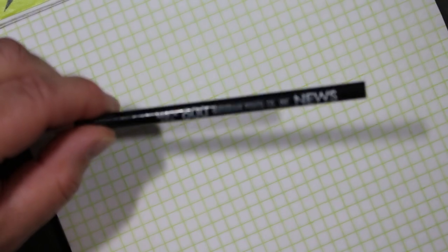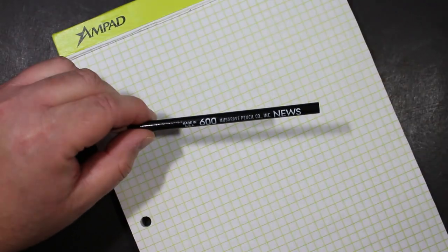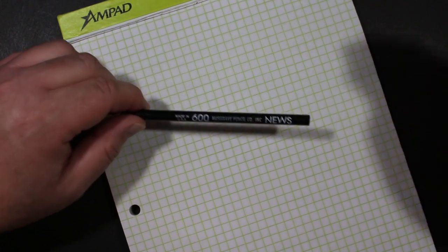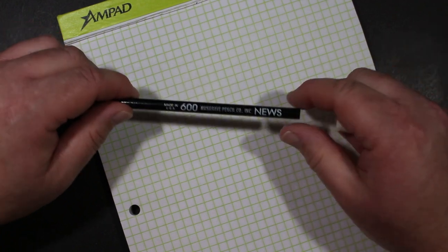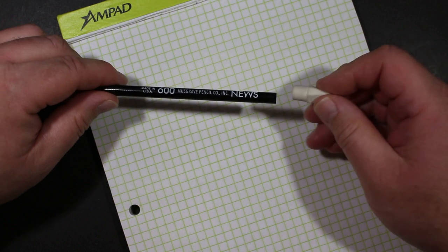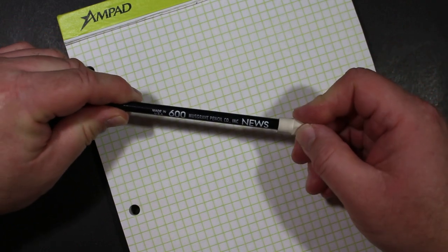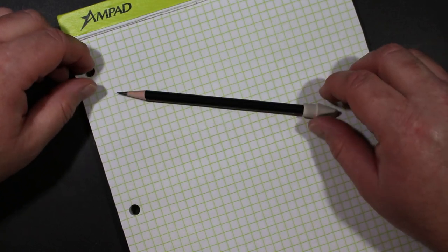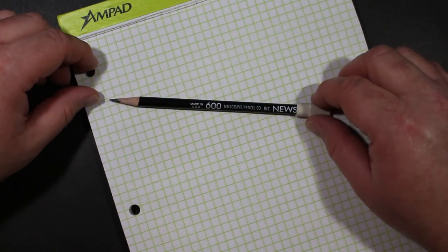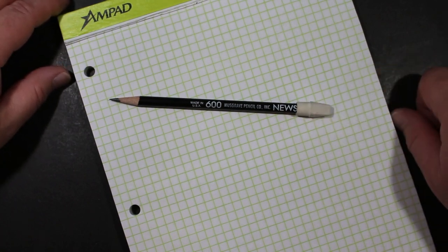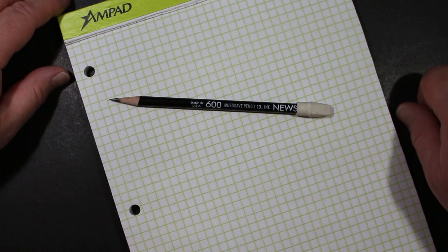Okay, I've got a Musgrave News here sharpened and ready to roll. I do use these pencils frequently. Sometimes, I always have block erasers. These are the Pentel eraser caps, which I like. And sometimes, many of my news pencils look like this.